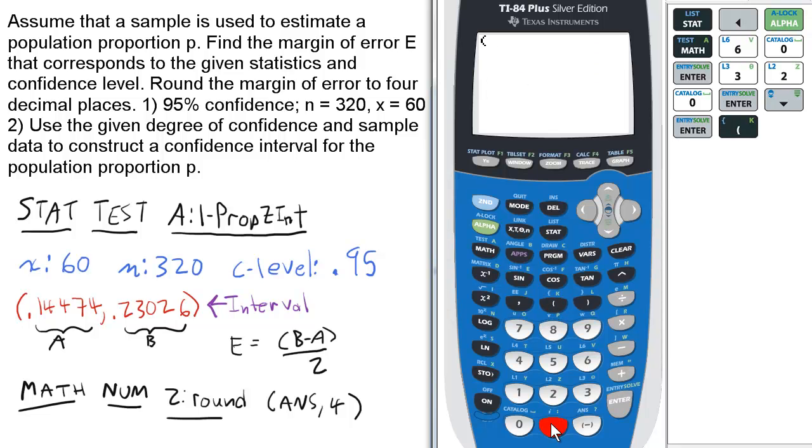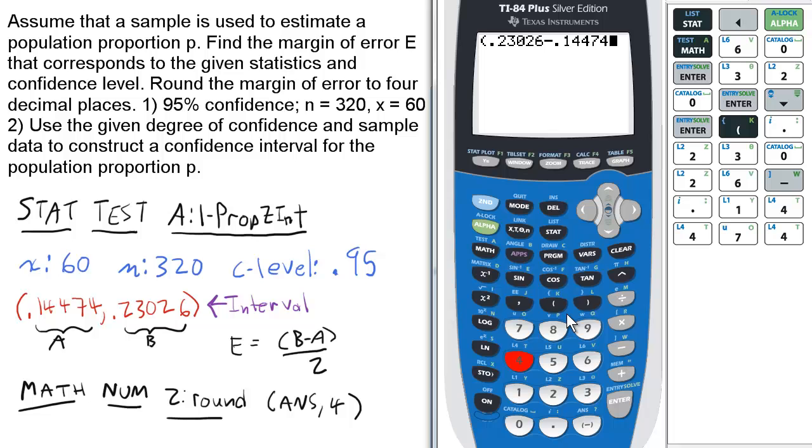enter the upper value first, which is 0.23026, then subtract the lower value of the interval, 0.14474. Close the parentheses, divide by 2, and press enter. That is your E value.